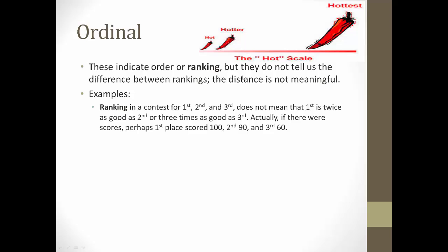So for example, if you have ranking in the contest for first, second, and third, it doesn't mean that first place is twice as good as second or three times as good as third. Because you could actually have first place scored perfect 100. Second place might have scored a 90, which was only 10 away. Third place might have scored 60, which is actually 40 less than first place, and they would still be ranked in that order.